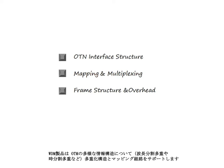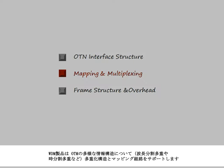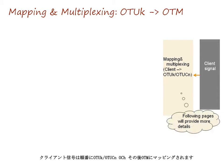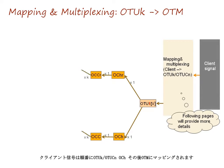WDM products support the multiplexing structures and mapping paths, including wavelength and time division multiplexing of various information structures for the OTM. Client signals are mapped to OTUK, OTUCN, and OCH in sequence and then to OTM.